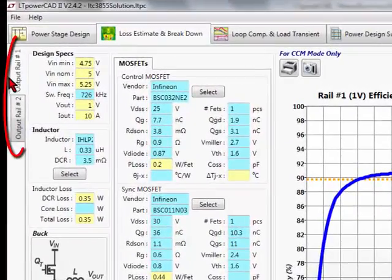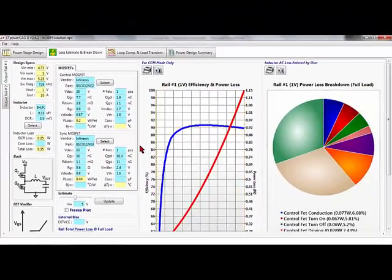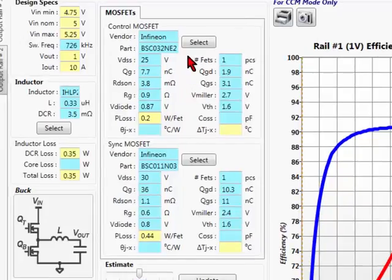The inductors and FETs can be changed from the components library in the loss estimation tab. In the upper side we can select new MOSFETs, and the lower side here we can select inductors.